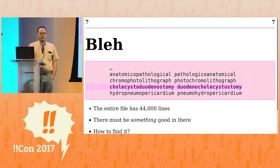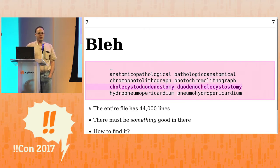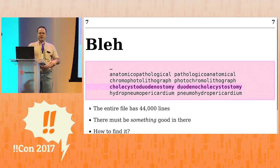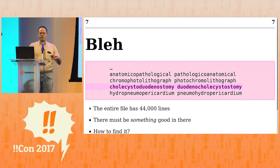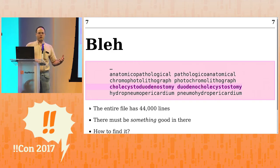The one I want to focus on is cholecystoduodenostomy. Cholecysto is the gallbladder and duodeno is the duodenum, which is the bottom end of the stomach. And ostomy is a surgical procedure to make a hole from one to the other — stomos is Greek for hole. And the anagram of cholecystoduodenostomy is duodenocolocystostomy, which is when you make a hole from the duodenum to the gallbladder.